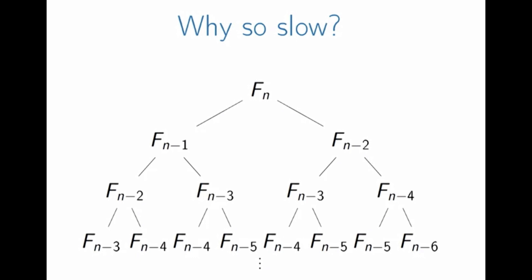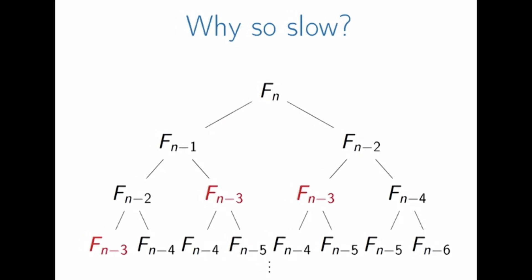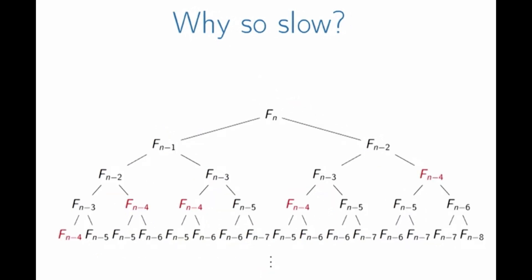Let's dig deep and understand why this algorithm takes so much time by looking at the recurrence tree. To calculate F(n), we need F(n-1) and F(n-2); for F(n-1) we need F(n-2) and F(n-3), and so on. It's a huge tree, and if you look carefully you'll see we're doing something silly — we're calculating F(n-3) three times. Since this is a recursive call, the algorithm calculates F(n-3) from scratch each time. F(n-4) gets calculated at least five times, and as you go deeper, the same things are computed over and over. This is the real problem with this algorithm.